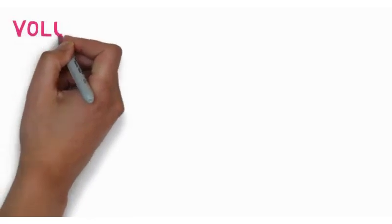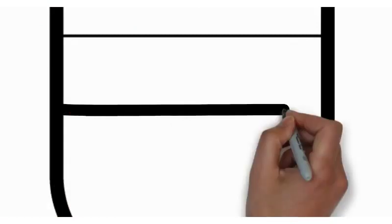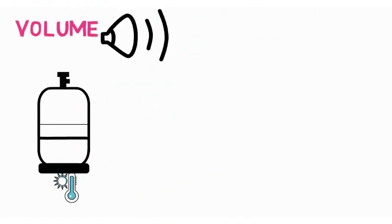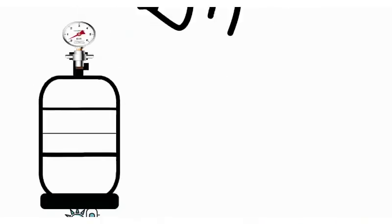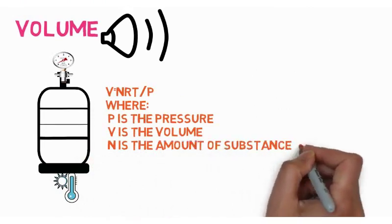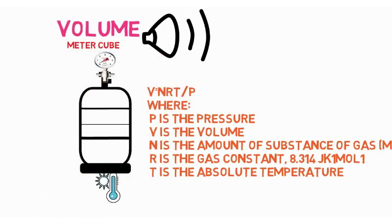Now, volume - not speaker volume, but the amount of gas. The volume of gas increases proportional to absolute temperature and decreases proportional to pressure, approximately according to the ideal gas law: PV = NRT, where P is pressure, V is volume, N is the amount of substance in moles, R is the gas constant (8.314 J/K·mol), and T is the absolute temperature. The SI unit is cubic meters.